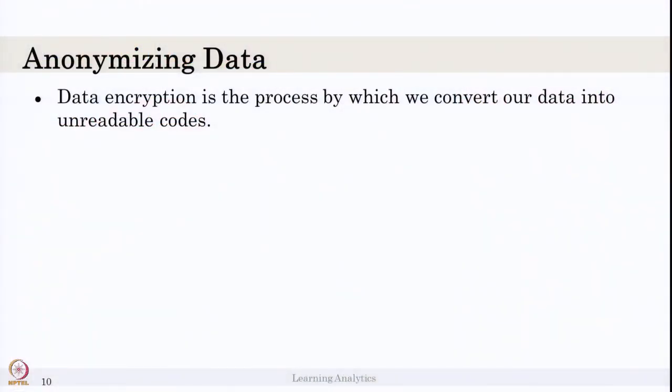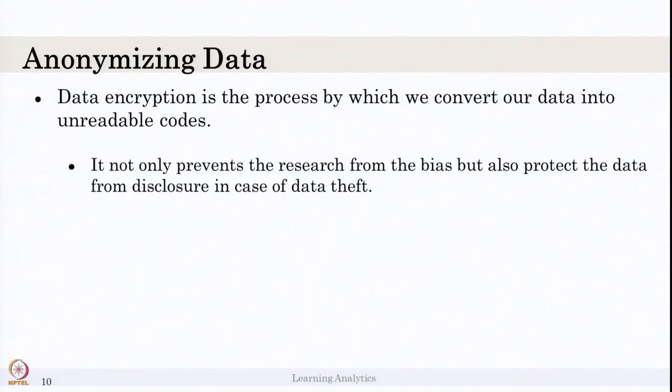The second key practice is anonymizing data. Data should be anonymized so that nobody can identify which user the data belongs to. Before full anonymization, I recommend encrypting the data — converting all names, emails, IDs, and phone numbers into unreadable unique codes, creating de-identified data. Encrypting data also helps researchers avoid bias, and if data is lost, encrypted data cannot be accessed without the specific password or keyword. It is highly recommended to keep all sensitive data, not just research data, in encrypted format.